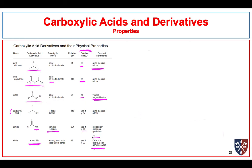Acetonitrile is a solvent we use quite often — it's fairly high boiling and very polar. We think of it as aprotic because the protons on that carbon are not very acidic at all.